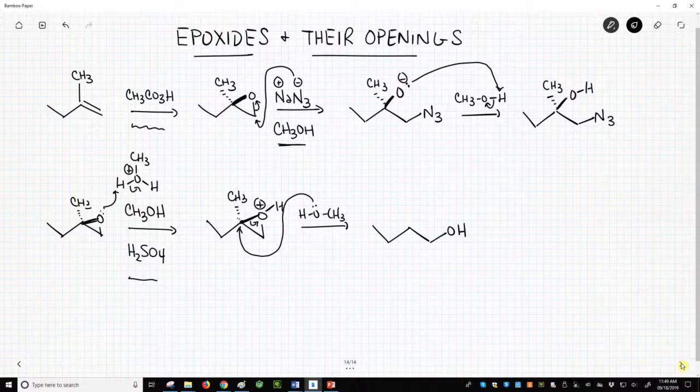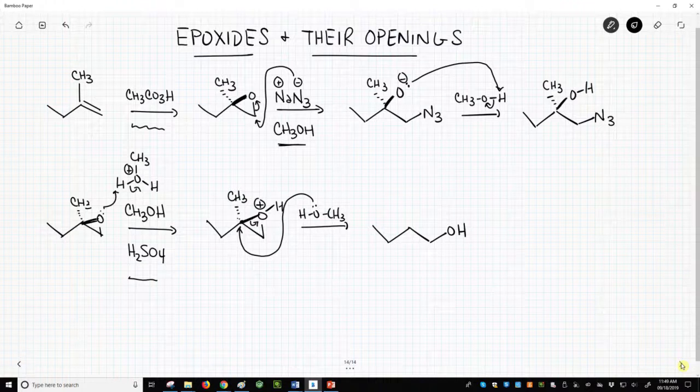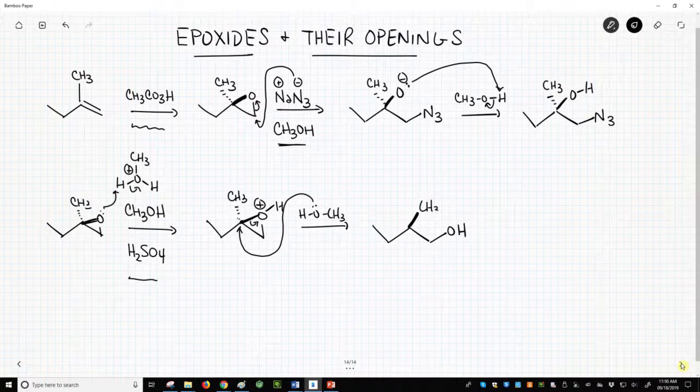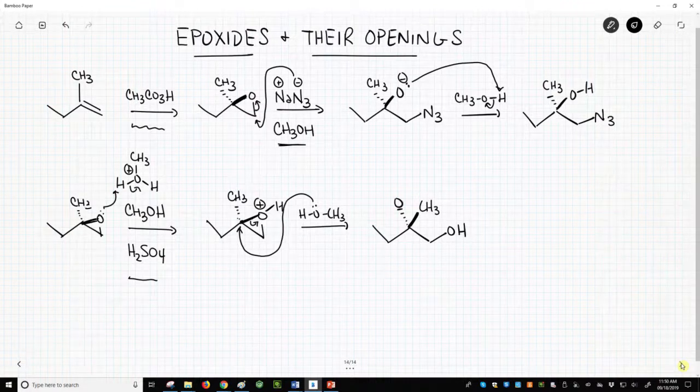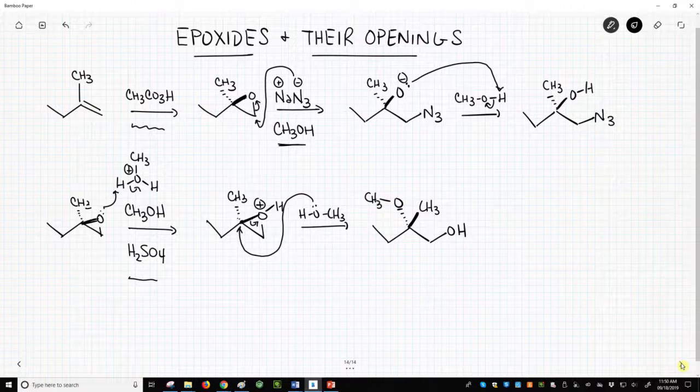So we have an OH there, and the ring opens with inversion of stereochemistry. So our methyl group gets pushed forward, and our methanol is back.